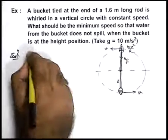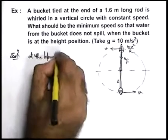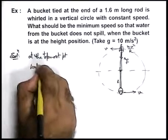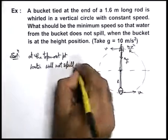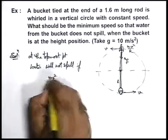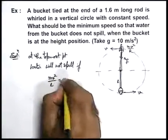We can say simply, at the topmost point, water will not spill if mv² by l, because the radius of this circle is l, is balanced by mg.